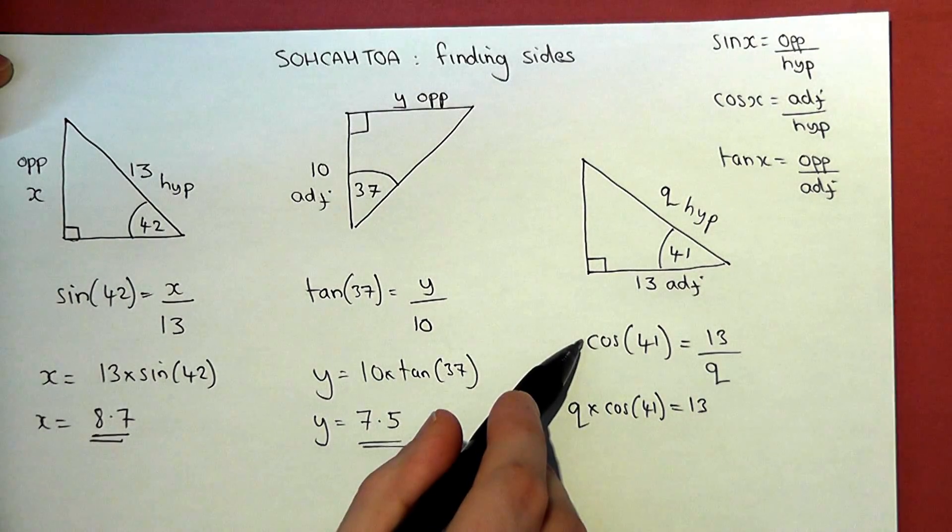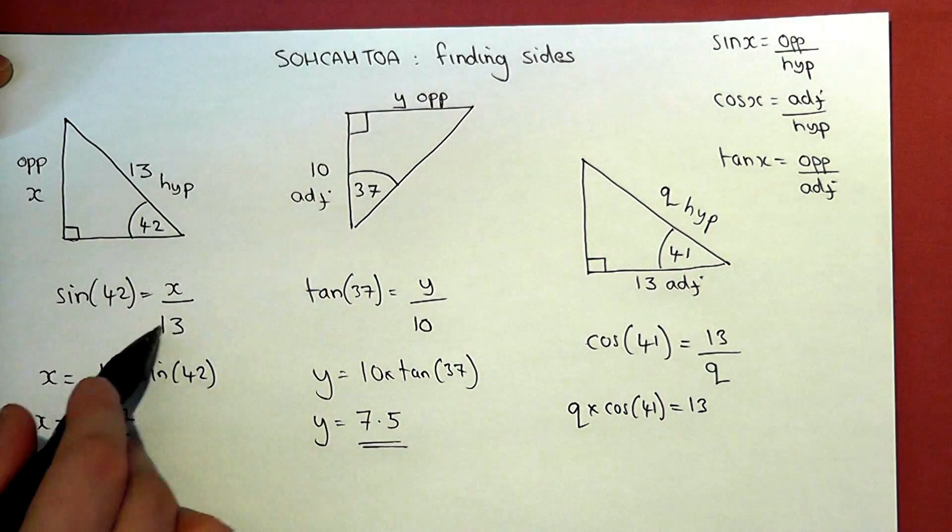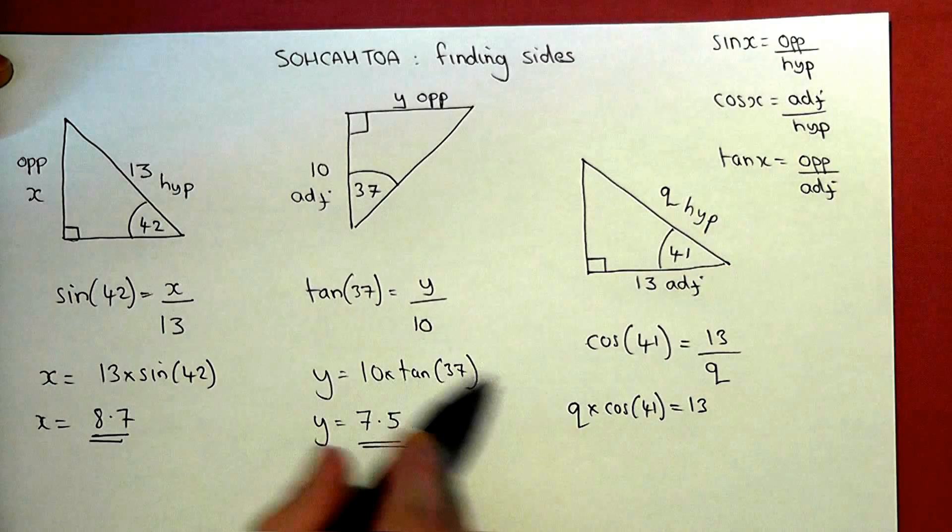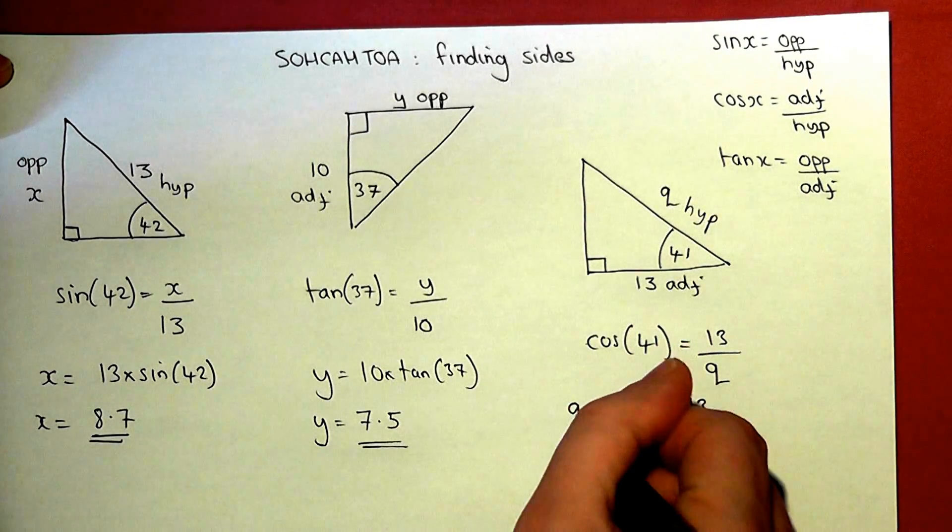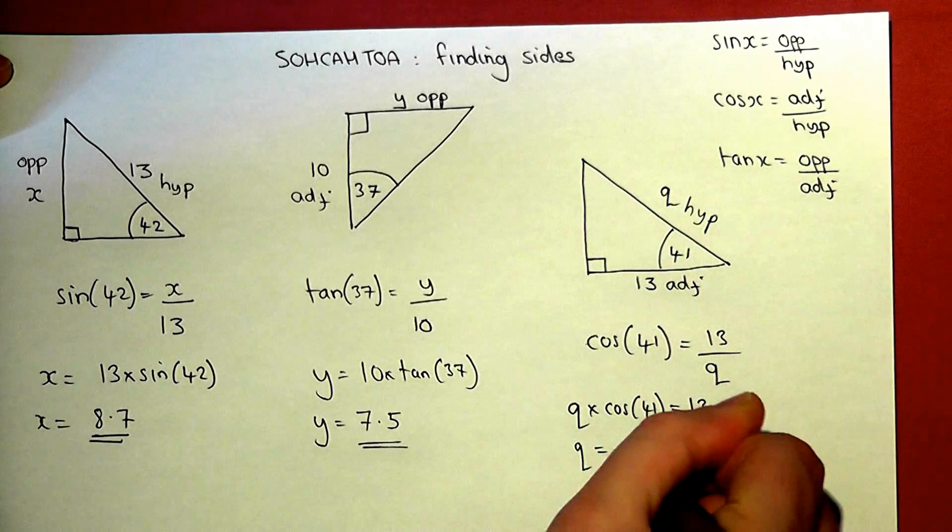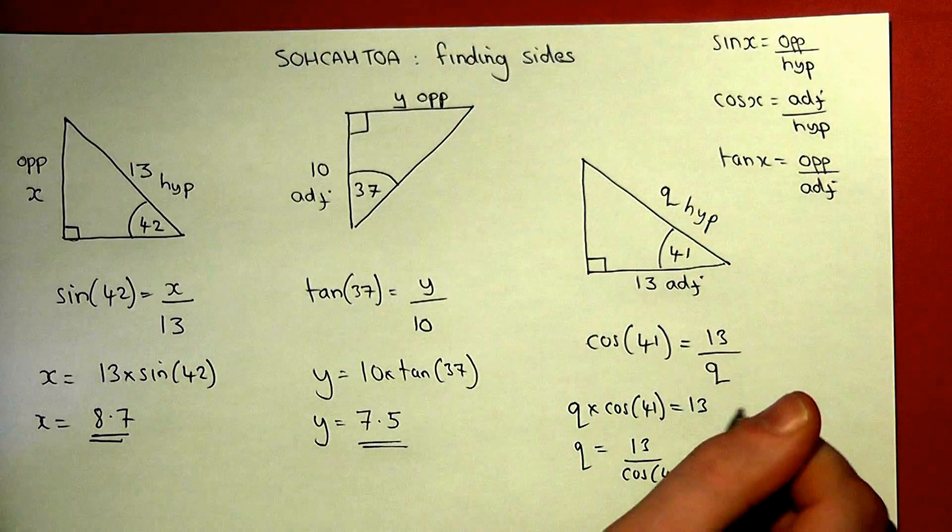I've multiplied by q, like I multiplied by 10 and 13 here. So to find q, I now divide by cos of 41. So q is 13 divided by cos of 41.